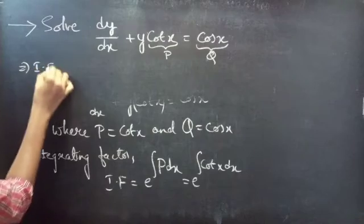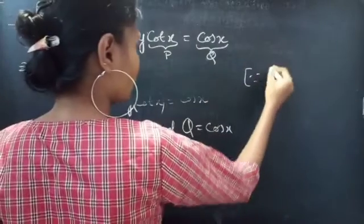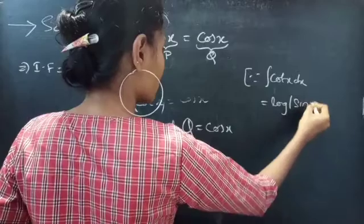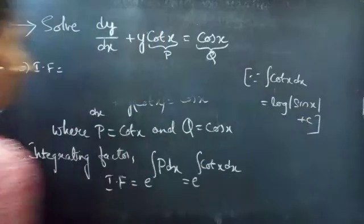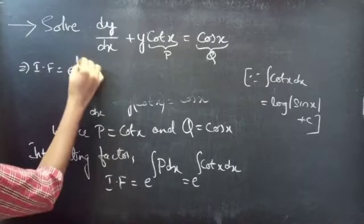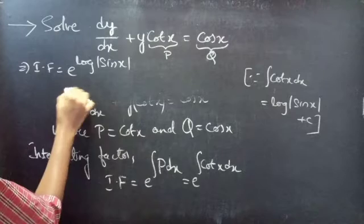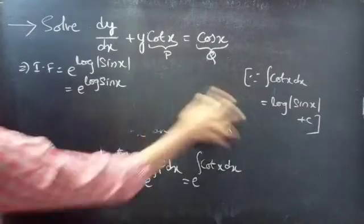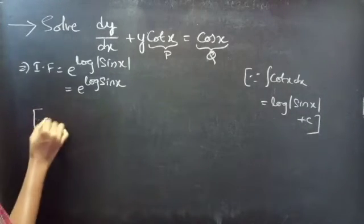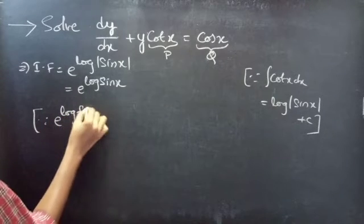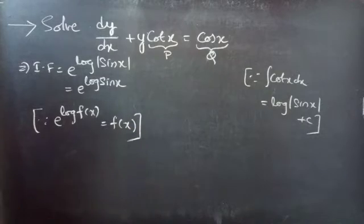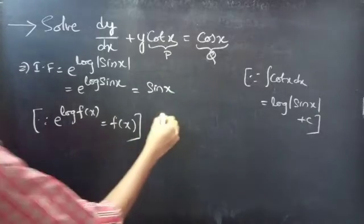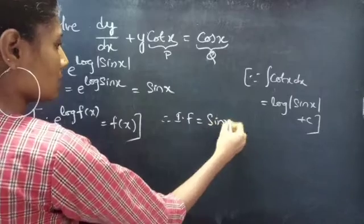Since we know that integral of cot x dx equals to log|sin x|, we can write IF equals to e to the power of log|sin x|. Since e to the power of log f(x) equals to f(x), therefore our integrating factor is sin x.